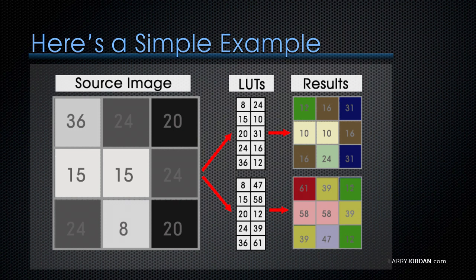But if I take it to the bottom look-up table, the number 8, instead of getting converted to color 24, gets converted to color 47. My source numbers are the same, but the end result is an image which is yellow and pink.